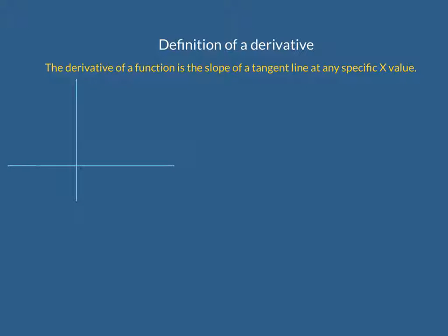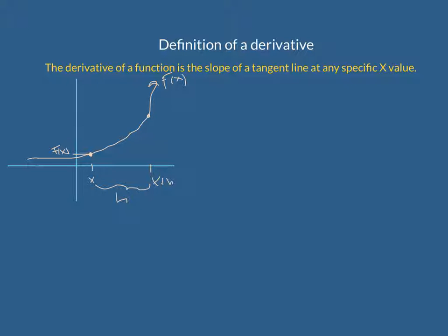Let's say we have this function f of x. I have an x value here — that's my x value on the graph — and the y value is f of x, meaning whatever that x value is, its y value is found by plugging that x value into the function. And then let's say that we go a distance beyond x. Let's say we go h units away from x and call that x plus h. Then on the graph, that y value is f of x plus h.